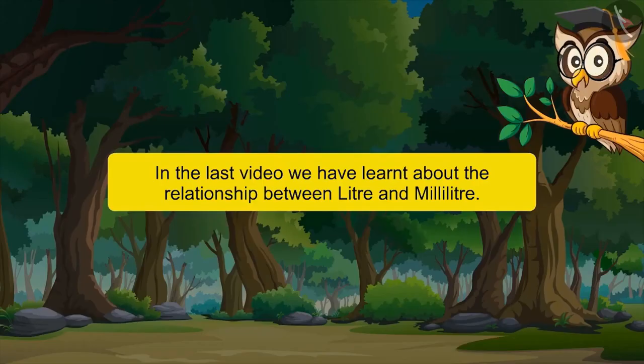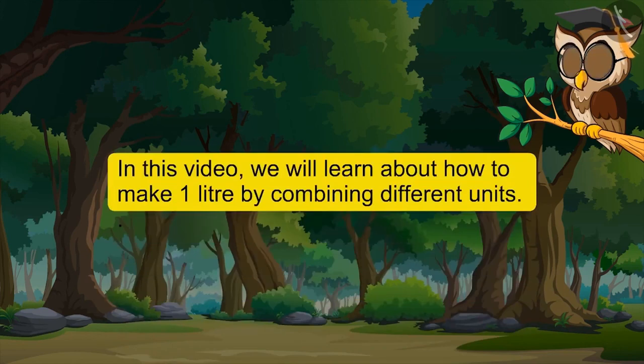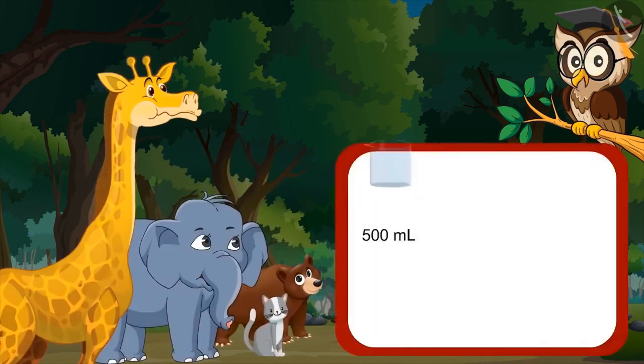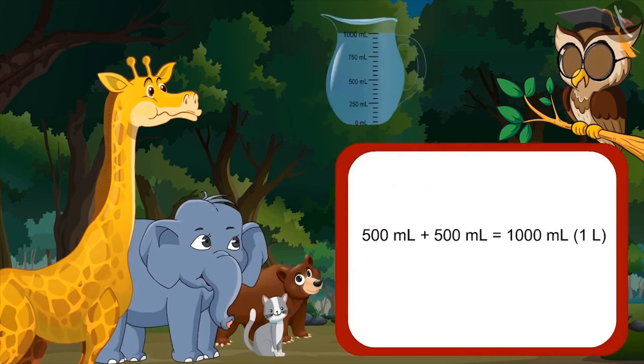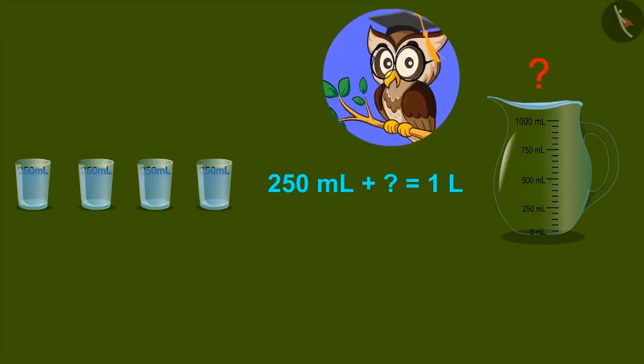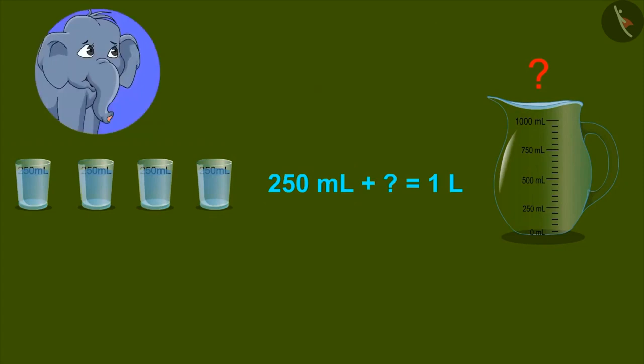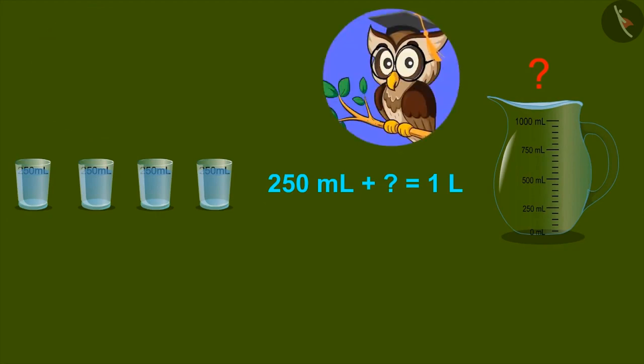In this video, we will learn about how to make one liter by combining different units. Do you know, mixing 500 ml twice gives one liter? Yes, sir. Are there any other units which on adding gives one liter? Sir, ask a bit more clearly. I couldn't understand. For example, do you think that glasses of 250 ml can be combined to form one liter? Yes, it can be made. No, I don't think so. One liter can be made out of 250 ml. So let's see how 250 ml and other units can be combined to form a liter.